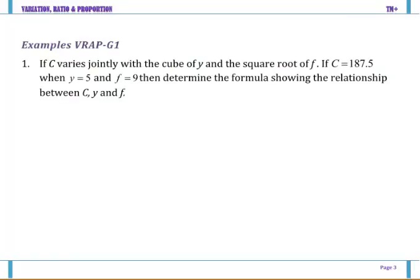So let's look at an example. Here it says if c varies jointly with the cube of y and the square root of f. That's saying that c varies with the cube of y and c also varies with the square root of f. So we can combine that to be c equals k y cubed square root of f.